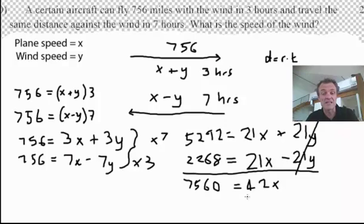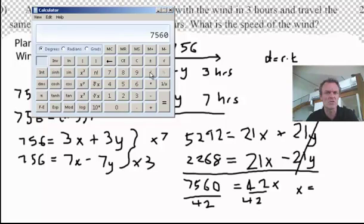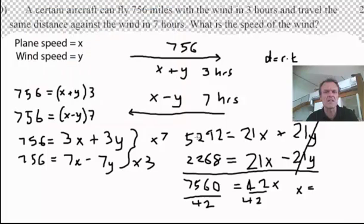So, divide by the number next to the letter. Let's divide both sides by 42. 42. And over here, x equals - well, 7560 divided by 42. Divide that by 42 equals 180. X is 180.